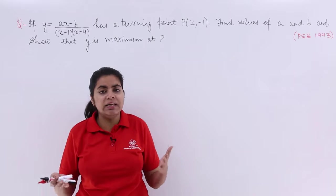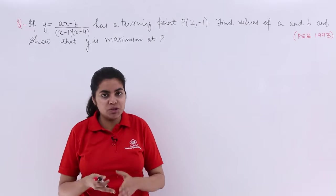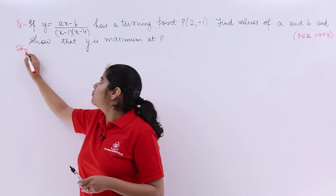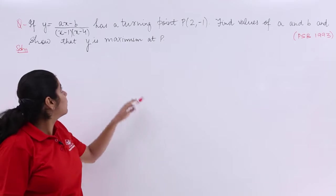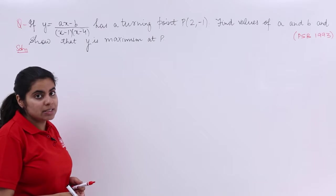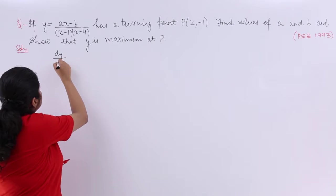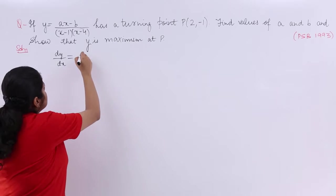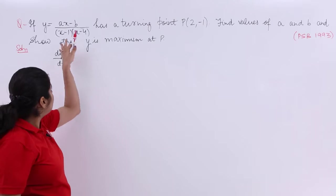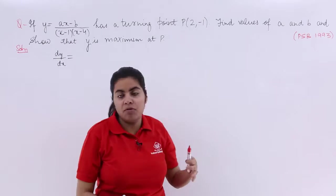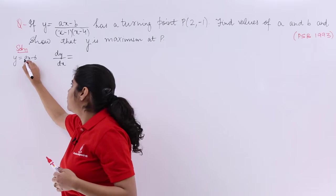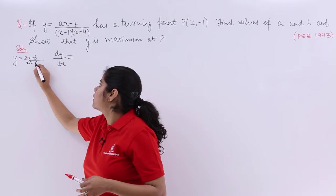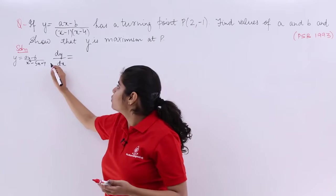These questions will be lengthy and will kill maximum of your time, but still you have to be very quick in answering the questions. Let's start with the solution. The question is y equals ax minus b upon x minus 1 times x minus 4. You have to directly find out dy by dx. Before everything, let's write y properly: y is ax minus b, and in the denominator, let's expand it. It is x square minus 5x plus 4.